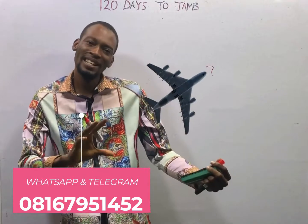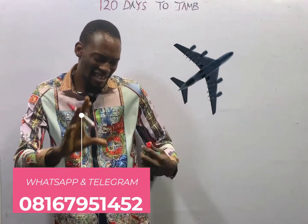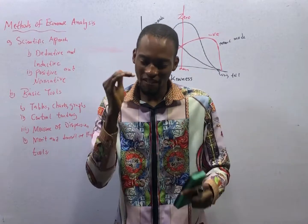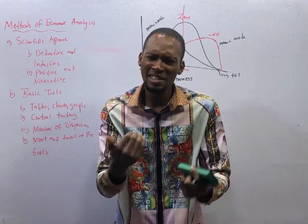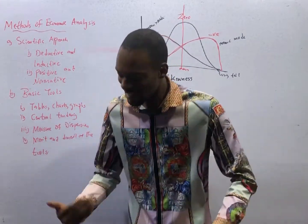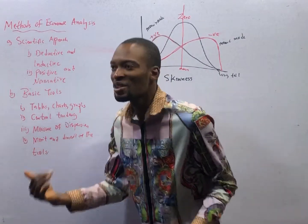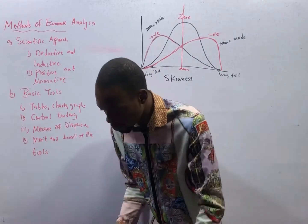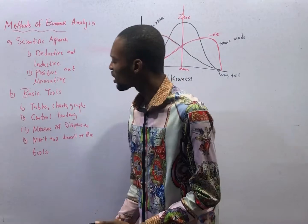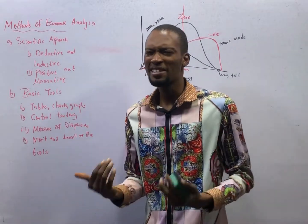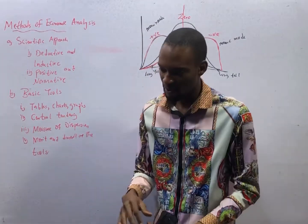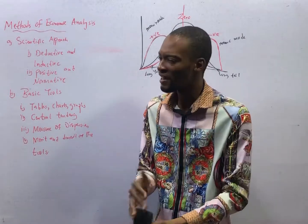Ladies and gentlemen, it is time to take off. Episode number 7 of the 120 Days to Jump Economics with Flash Isaac. This class is an appetizer to introduce you to calculations in economics. And when you hear calculations, fear should not romance your mind. Relax. Flash Isaac got you covered.